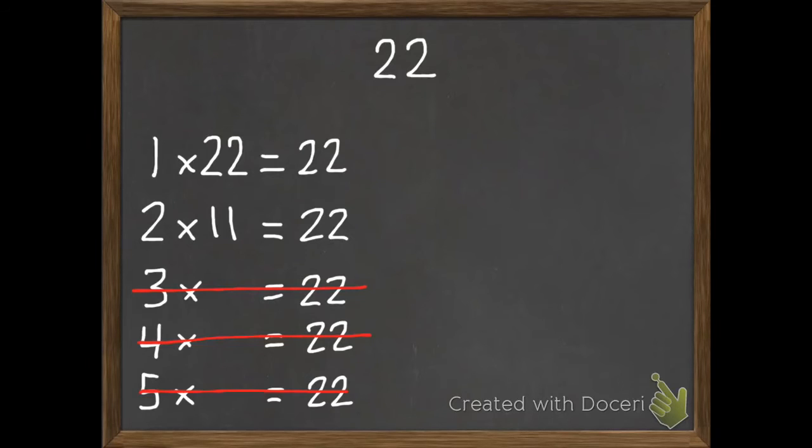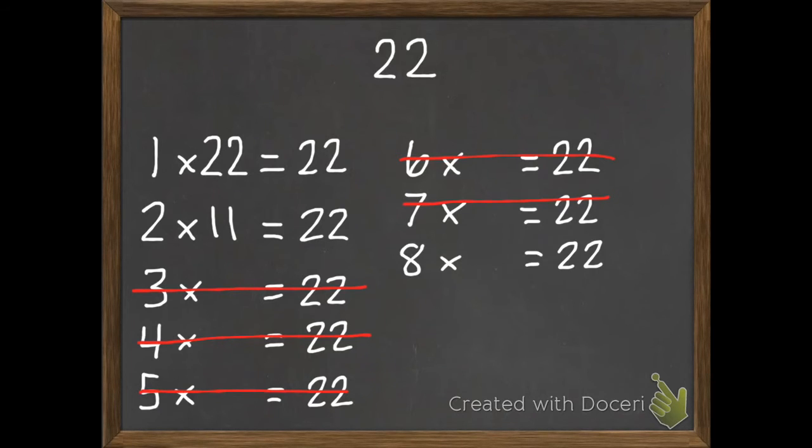So I just keep going. Try 6. I have 6, 12, 18, 24. So no 22. I have 7, 14, 21, 28. Still no 22. Try 8. My 8s are 8, 16, 24. Still no 22.